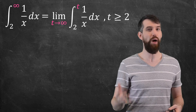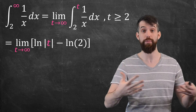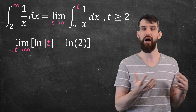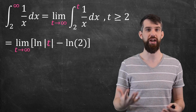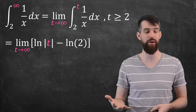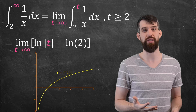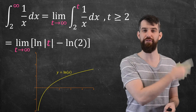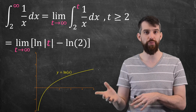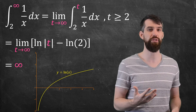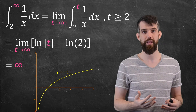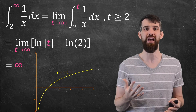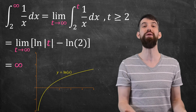Why is this helpful? We compute the integral with t in place of infinity: it equals the logarithm of t minus the logarithm of 2. Now we just ask what the limit of this function is. Looking at the graph of logarithm, as t goes to infinity, the logarithm also goes to infinity. So this integral is just equal to infinity — it diverges. You might say this is expected, but there's more to the story.